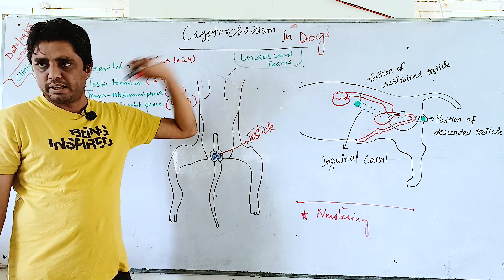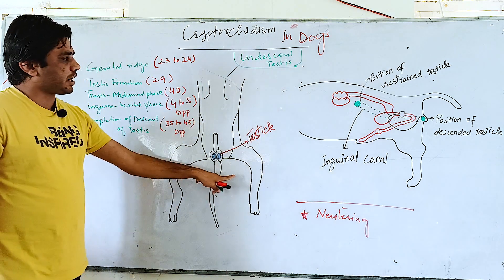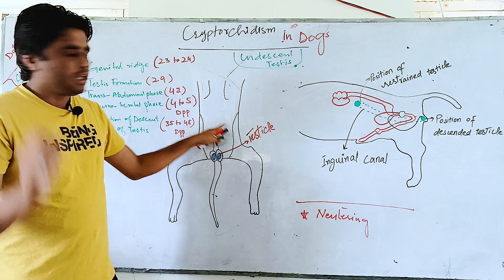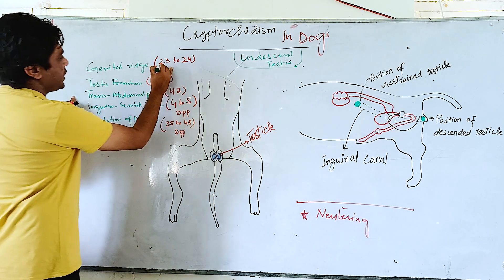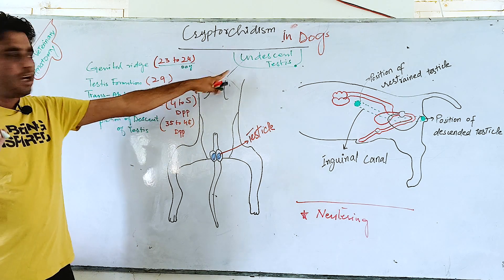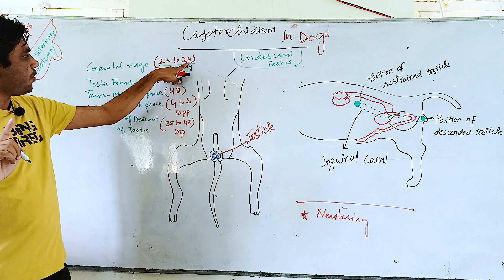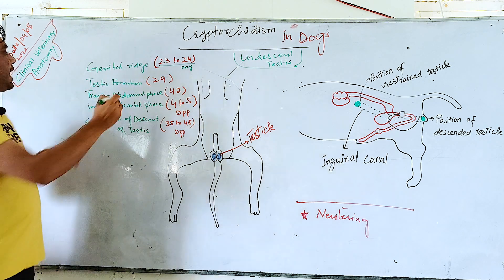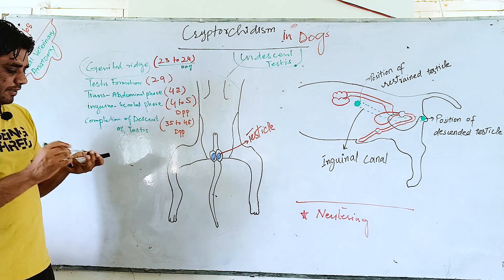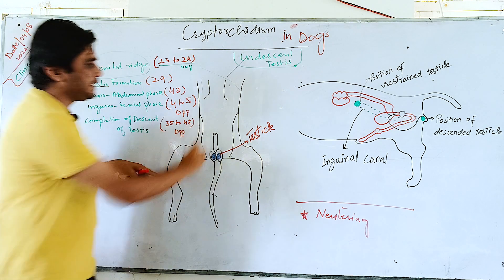For the descent of testis, these two diagrams are helpful to understand. Normally during embryonic life, at day 23 to 24 in dogs — we are giving focus only to dogs — during embryonic development after fertilization, a structure appears in the abdomen which is known as the genital ridge.